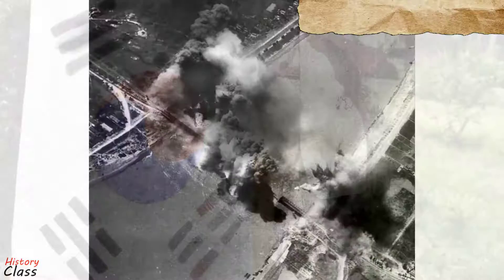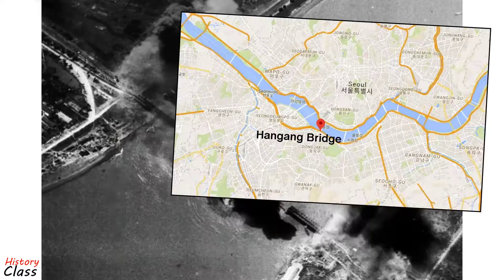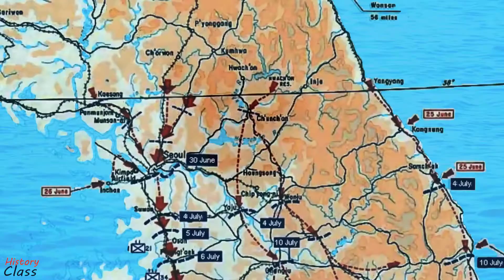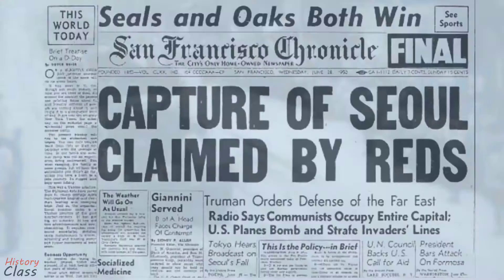On 27 June, Rhee evacuated from Seoul with some of the government. On 28 June at 2 am, the South Korean army blew up the Han River highway bridge in an attempt to stop the North Korean army. The bridge was detonated while 4,000 refugees were crossing it, and hundreds were killed. Destroying the bridge also trapped many South Korean military units north of the Han River. In spite of such desperate measures, Seoul fell the same day.